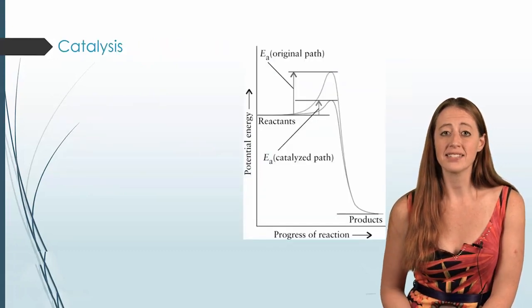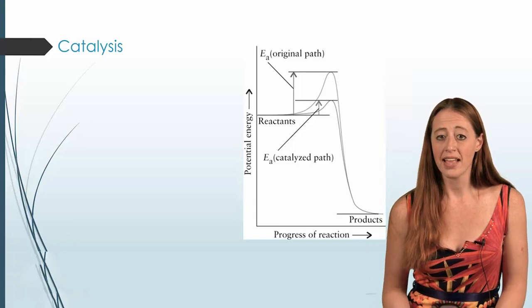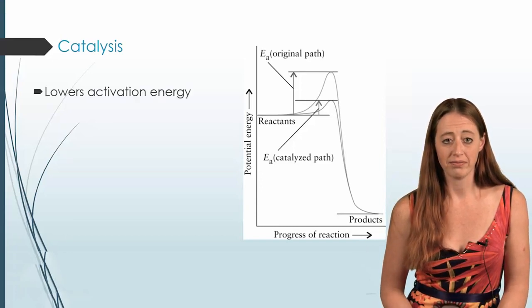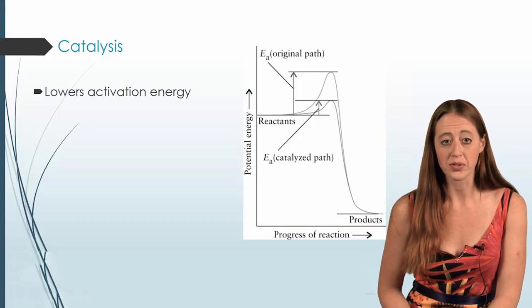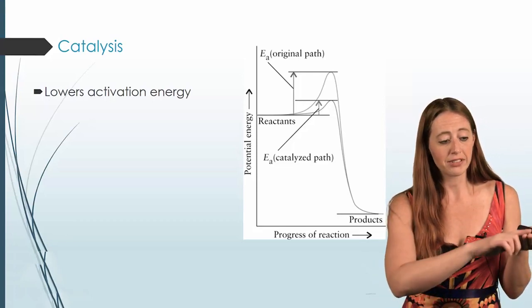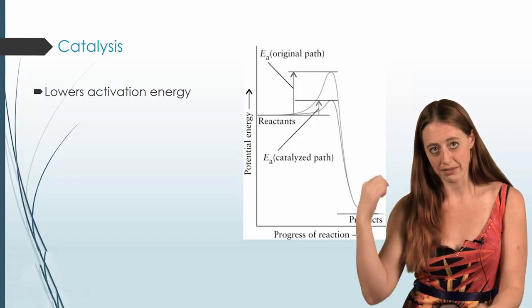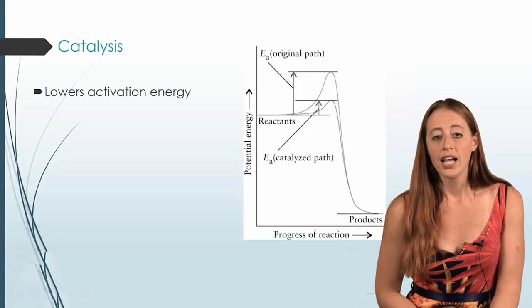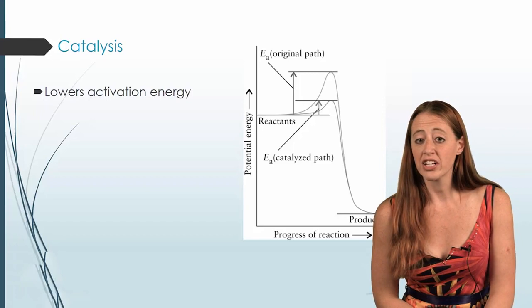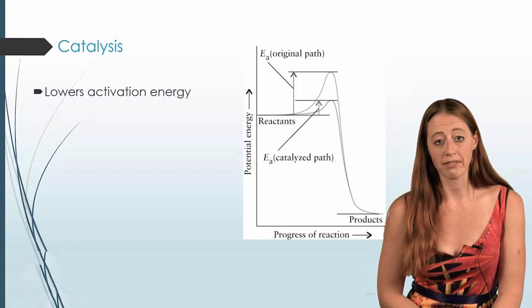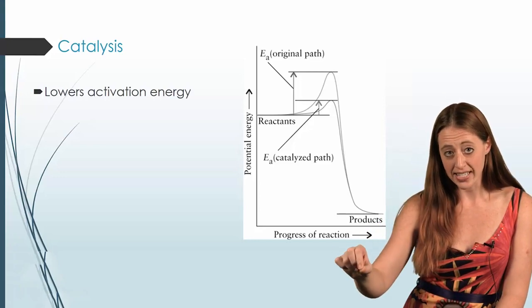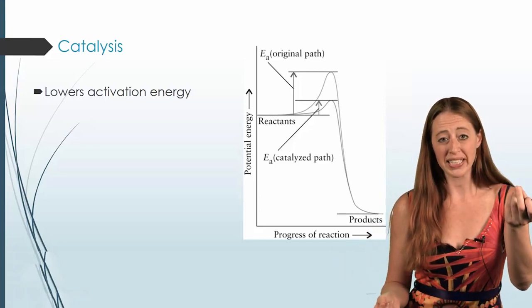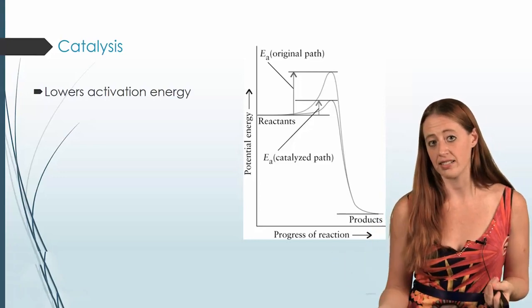So in catalysis, we are going to be adding a substance that lowers the activation energy. This is a graph very similar to the ones I showed you in earlier videos, where you had a reaction pathway. First it goes up in energy and then it comes back down. And here I've actually shown two different things on one graph. You'll notice in the lower graph, the beginning and the end are the same. That's because when we're doing catalysis, we aren't changing our reactants or our products. Those are the same.